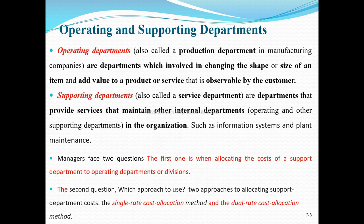We have two types of departments, whether in a service business or manufacturing business: the operating department and the supporting department. The operating department — also called the production department in a manufacturing company — involves changing the shape or size of an item and adds value to the product or service, converting raw materials through production activity.